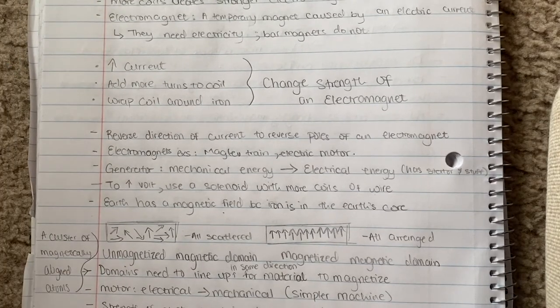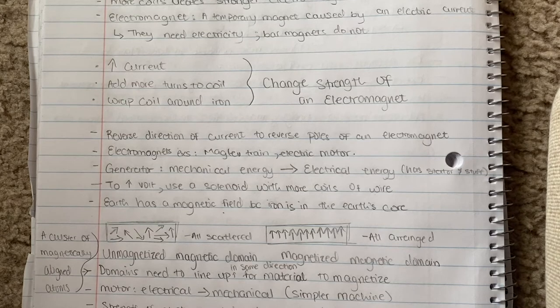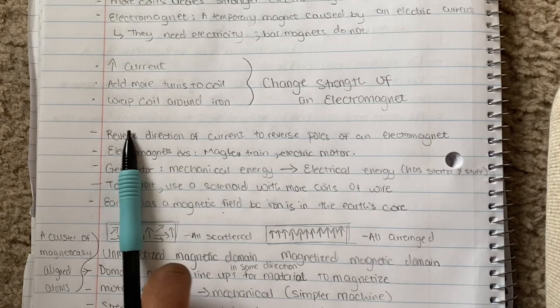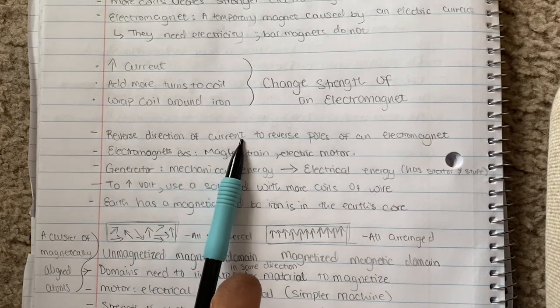Reverse direction of current to reverse poles in electromagnet. If you wanted to reverse the poles of your electromagnet, so like north and south, you would have to reverse the direction that the current is flowing in.